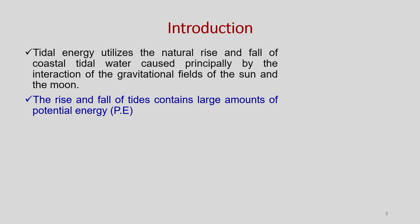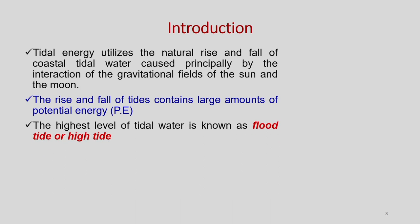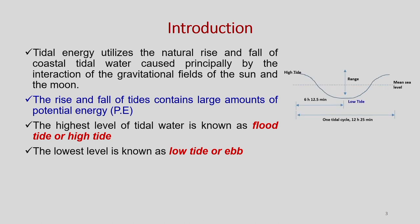The rise and fall of tides contains a large amount of potential energy. The highest level of tidal water is known as flood tide or high tide. The full tidal cycle is about 12 hours and 25 minutes — from high tide to low tide and back to high tide. The half cycle from high to low tide is 6 hours and 12.5 minutes, and this difference between high tide and low tide is known as the range.